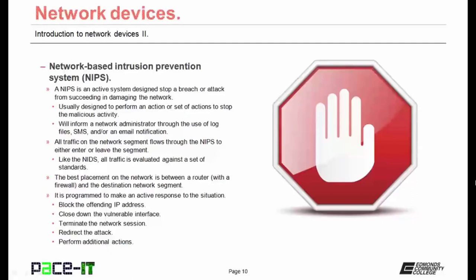Just like the NIDS, the NIPS will inform a network administrator through log files, text messages, voicemail, and/or email notifications. All traffic on the network system is required to flow through the NIPS to either enter or leave the segment. Like the NIDS, all traffic is evaluated against a set of standards, and the NIPS uses the same standards as the NIDS. The best placement on the network is between a router — which hopefully has a firewall — and the destination network segment.